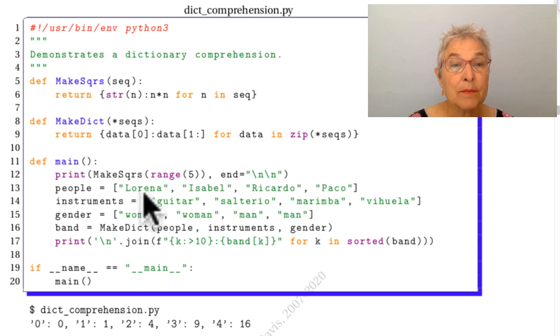Next we have some people, four people, four instruments, four genders—well actually two genders, but a list of four.